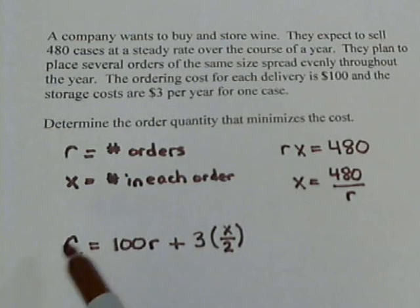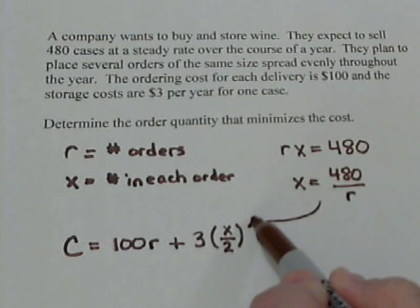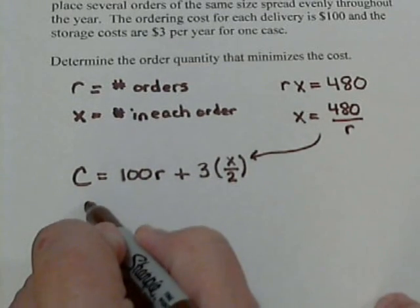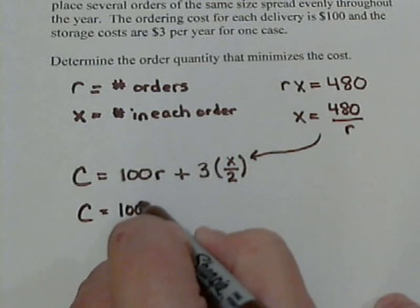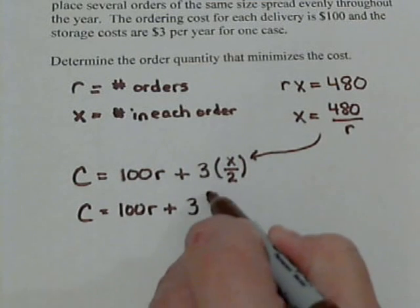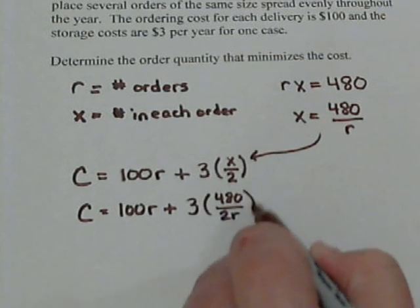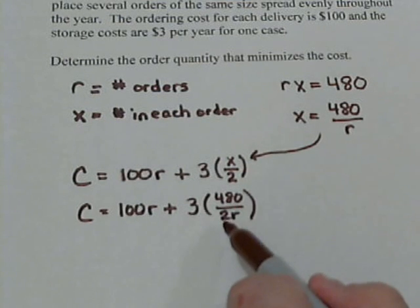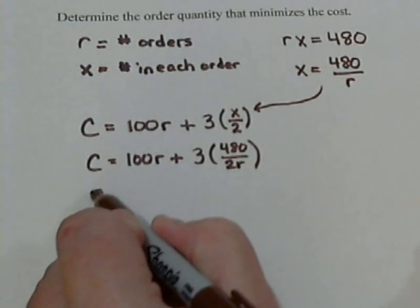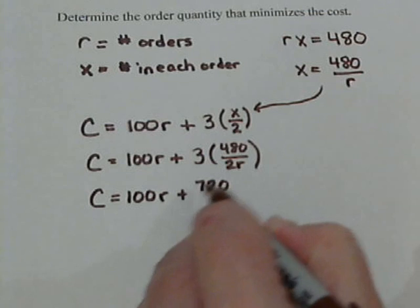So if we want to minimize this, we need the derivative. Unfortunately, we have three variables. Well, that's why we did this substitution here. So we're going to take this x and put it in place of this x. So that gives our c equals 100r plus, if we put all this in for x, we're going to have 3 times 480 over r and then also over 2. So 480 over 2r. Well, 480 over 2 is 240. 240 times 3 is 720. So we're now down to our cost being 100r plus 720 over r.